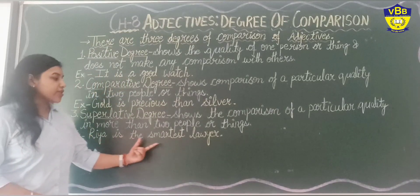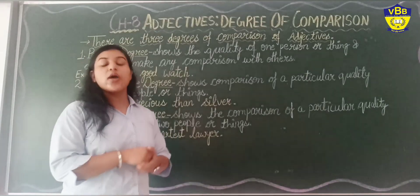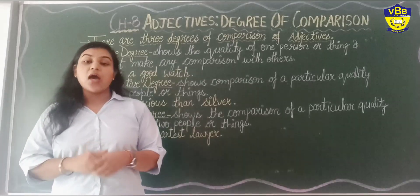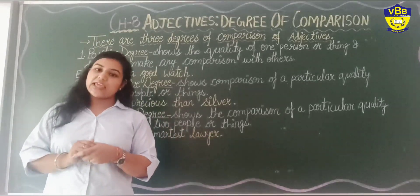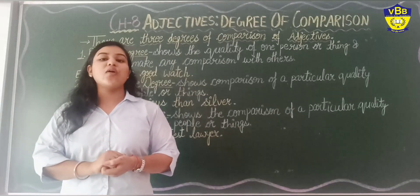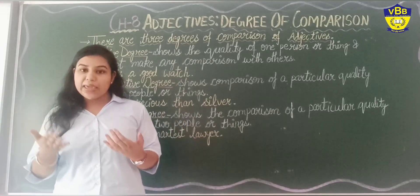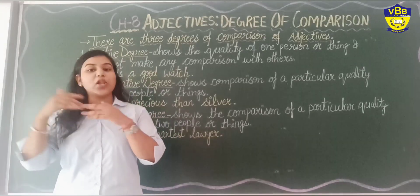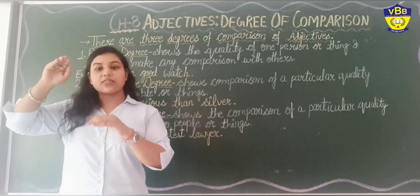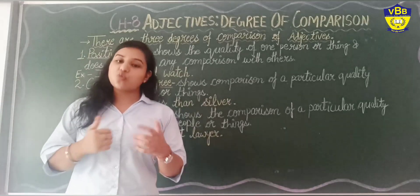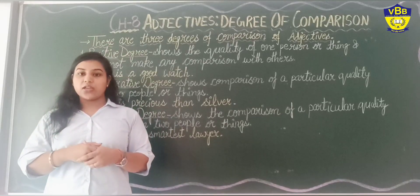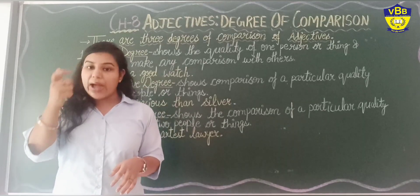For example: "Ria is the smartest lawyer." Here we are talking about Ria, who is the smartest one among all the lawyers. So we are saying that among all the lawyers, Ria is the smartest one. In Superlative Degree, we focus on the most prior, most compatible one among more than two people or things.